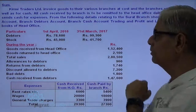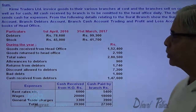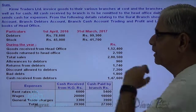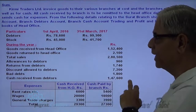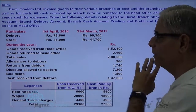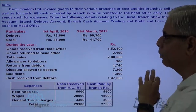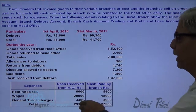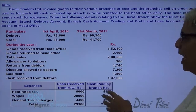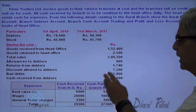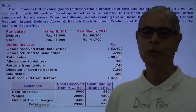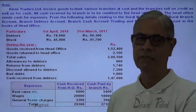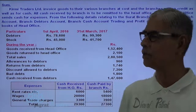Goods received from HO, goods returned to HO, total sales, allowances to debtors, returns from debtors, sales returns, discount allowed to debtors. This is the cash sent for expenses, and out of this cash sent, these are the expenses paid. Now let me prepare the branch account from this information.